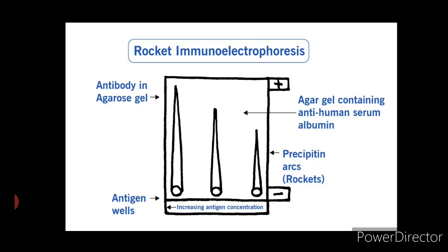In rocket immunoelectrophoresis, antigen from wells migrates electrophoretically into an agar gel which contains specific antiserum, i.e. antibody. This results in a rocket-shaped precipitate, as shown in the figure. The height of each rocket is proportional to the concentration of the antigen in the well.